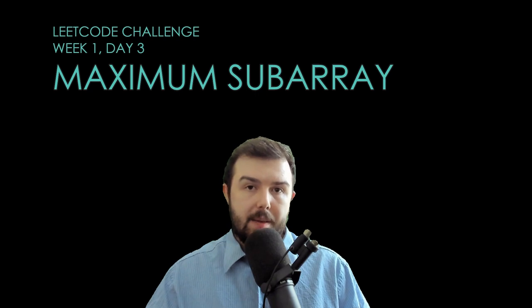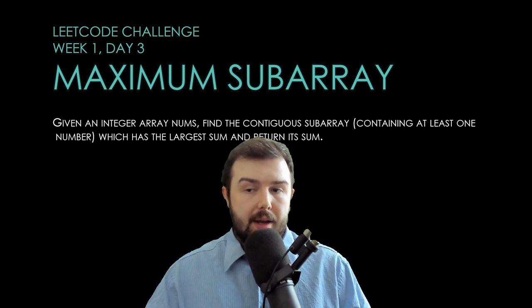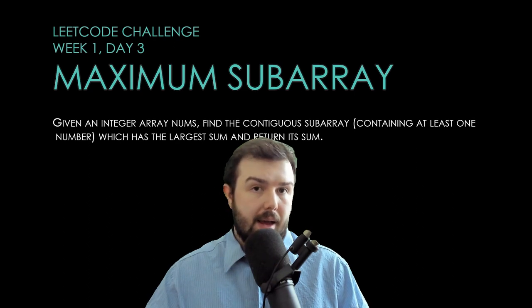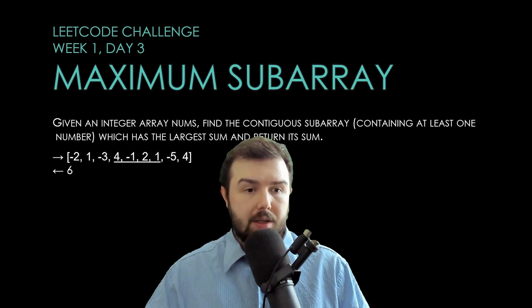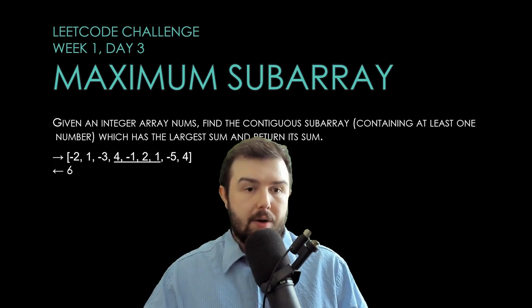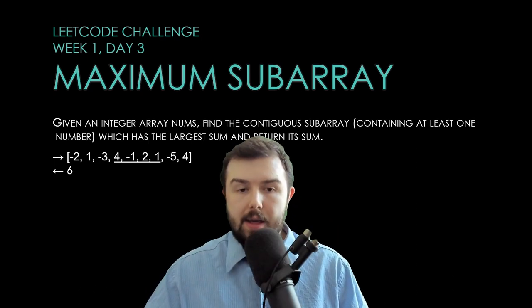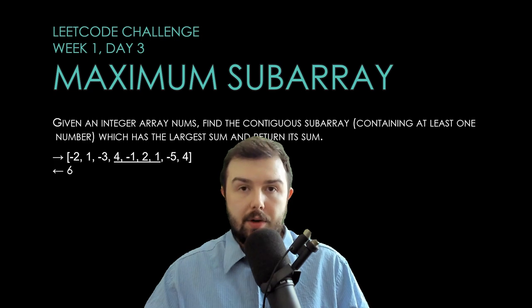Let's start with observing the problem. Given an integer array, find the contiguous subarray containing at least one number which has the largest sum and return the sum. So we have numbers and some part of this array results to number six, which is the largest subarray in this array.